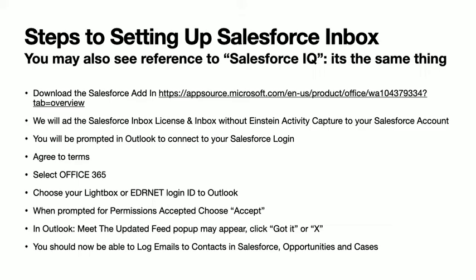When prompted for permissions, choose Accept. And then in Outlook, you'll probably see a pop-up that says 'Meet the Updated Feed.' You can just X out of that or hit 'Got It.' From there, you should be able to log emails to contacts, Salesforce opportunities, and cases.